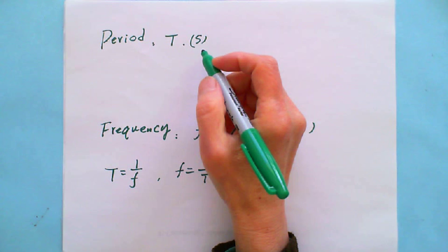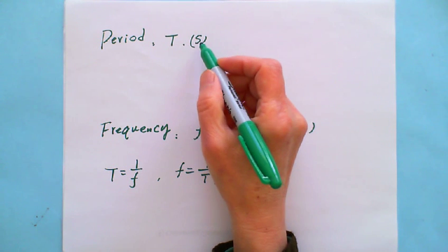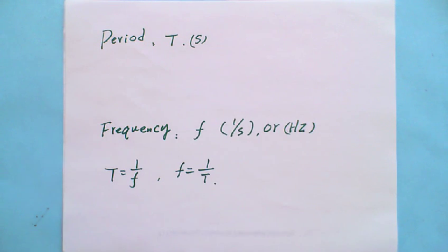Mostly the period we use second. When you do calculation, you use second. But sometimes it depends on the situation. For example, talking about the earth rotates around the sun, it takes one year to rotate once. In that situation, mostly we talk about the period is one year.